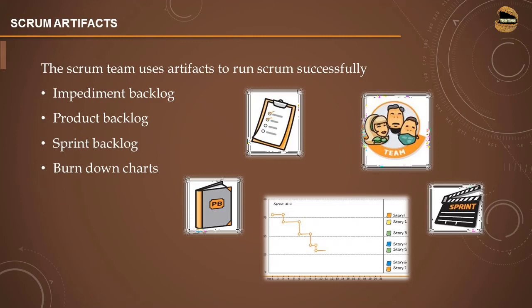The Scrum team uses a lot of artifacts to run Scrum successfully and help the organization meet expectations and deliver milestones. The first artifact is the impediment backlog — a simple list of hurdles, blockers, or impediments that cause waste in the organization. In simple terms, these are challenges you face: insufficient information, a team member on leave, or anything that prevents you from delivering the expected item at the end of the sprint.